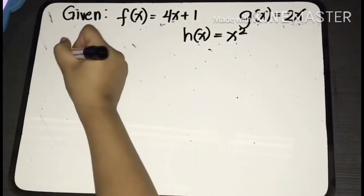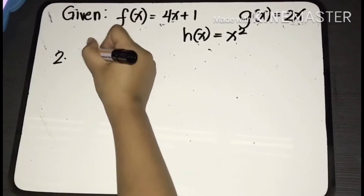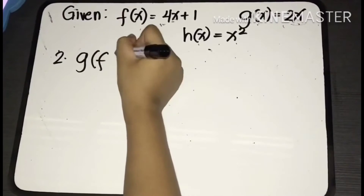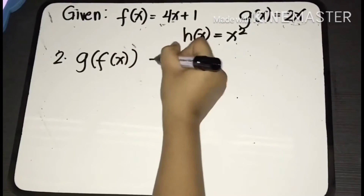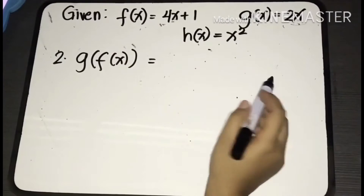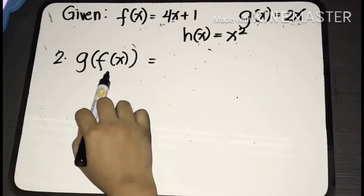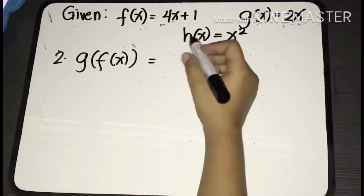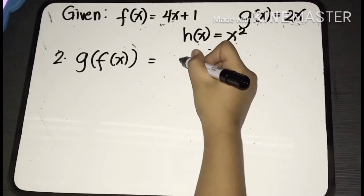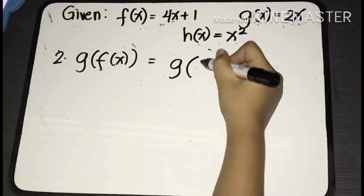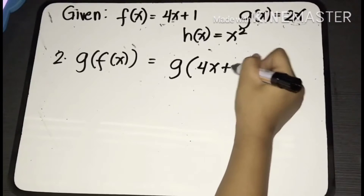For the next example, we are asked to find g of f of x. Again, look at the function inside the parentheses, which is f of x. We will substitute f of x and copy g, so we'll have g of 4x plus 1.